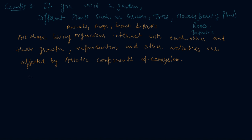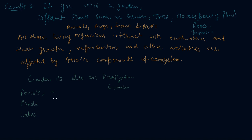You can say that a garden is also an ecosystem. Other types of ecosystems are forests, ponds, and lakes. These are natural ecosystems, while gardens and crop fields are manmade ecosystems.